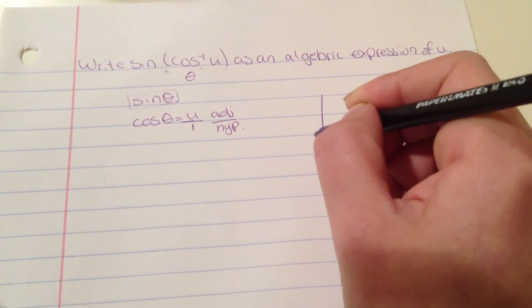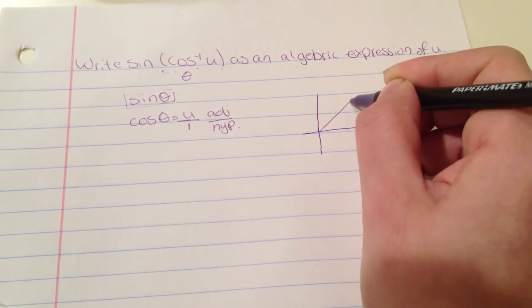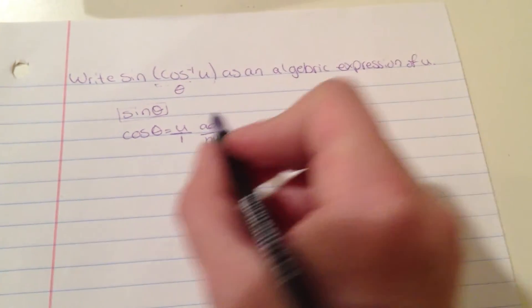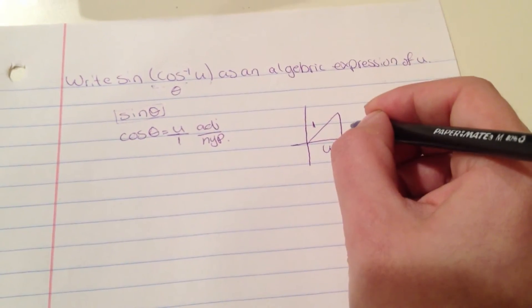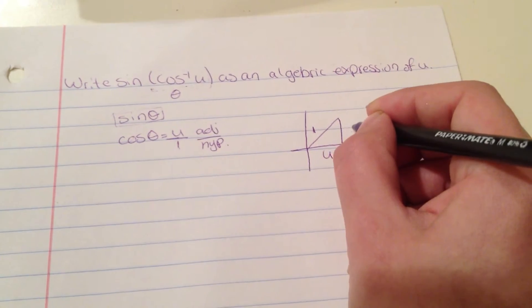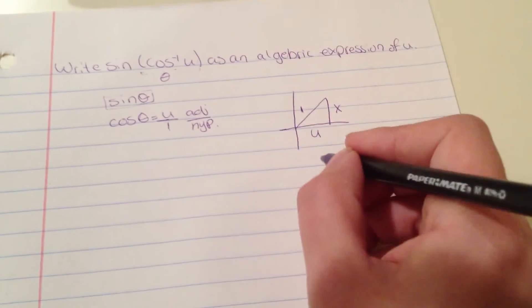We're going to find the other side using the Pythagorean theorem. We have the adjacent side which is u, and the hypotenuse is 1. We have to find this side, so I'm going to name it X.